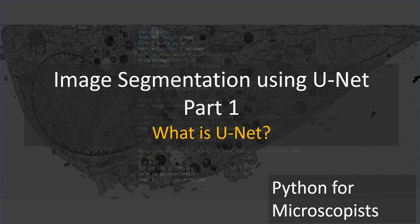U-Net is a special type of architecture for image segmentation purposes. When I say architecture, that means an arrangement of the deep learning tools that we are familiar with — like convolutional layers and max pooling — arranged in such a way that the result is image segmentation. I'm not going to talk about what a convolutional layer is, as I've already covered that in one of the previous videos.